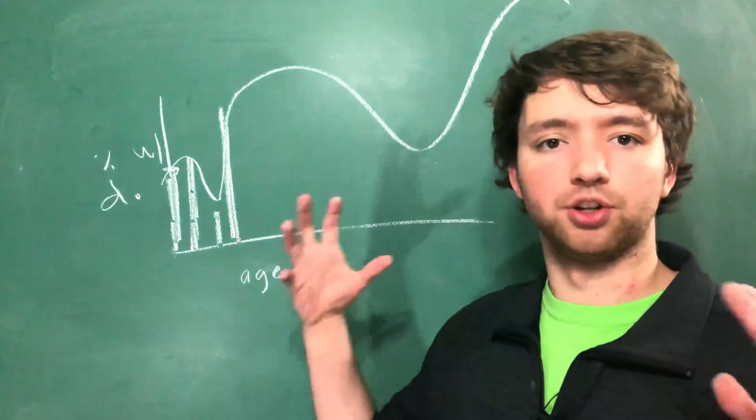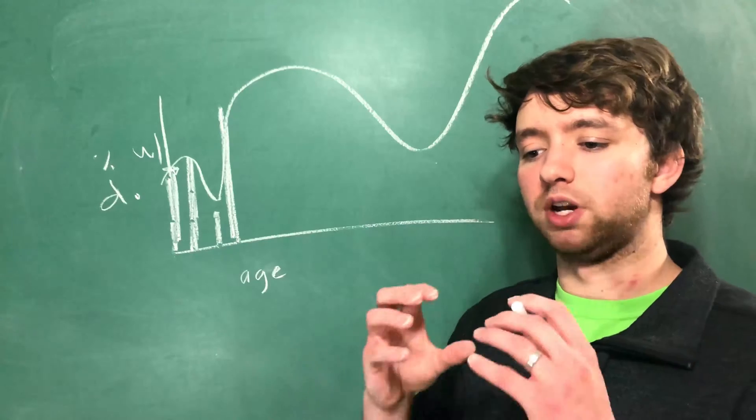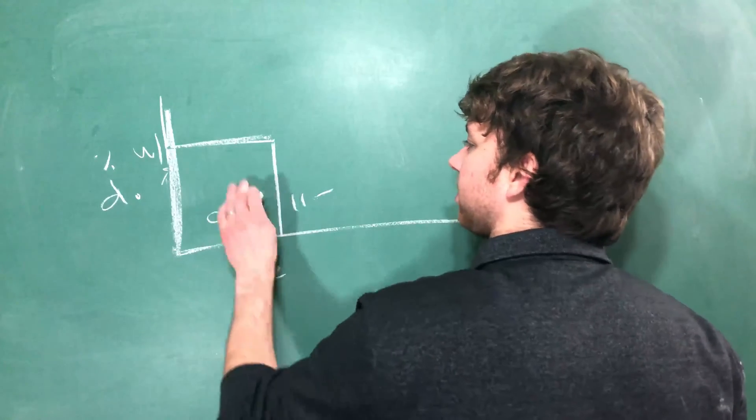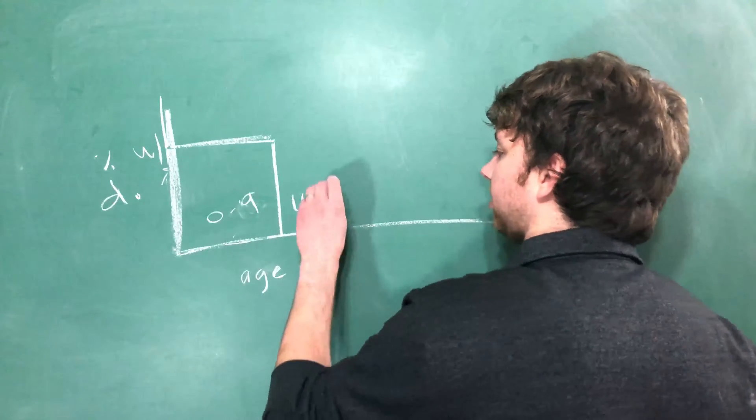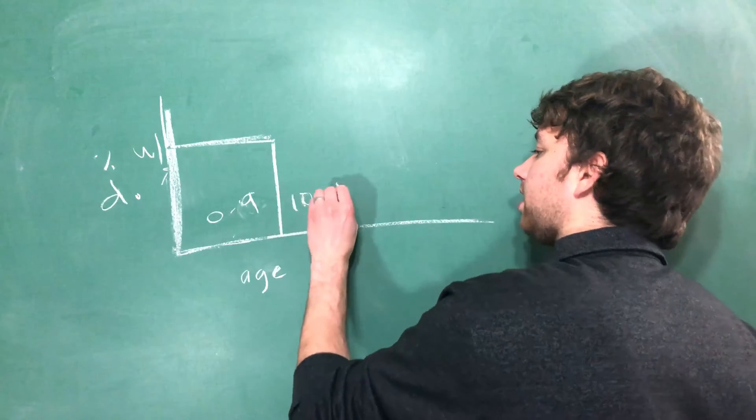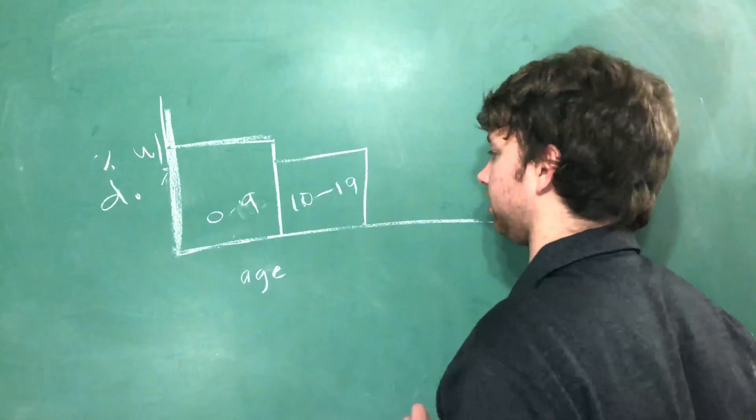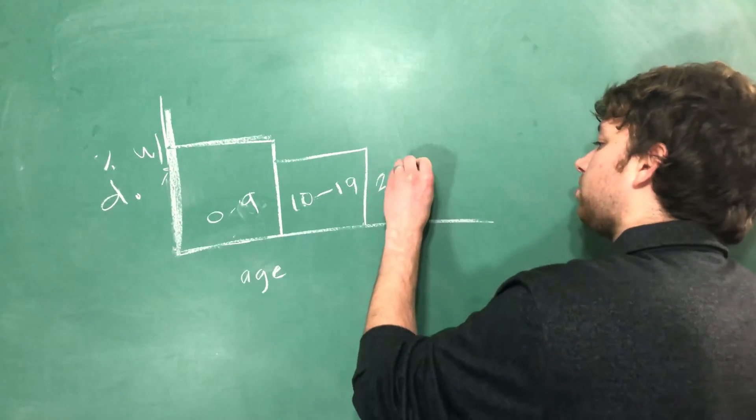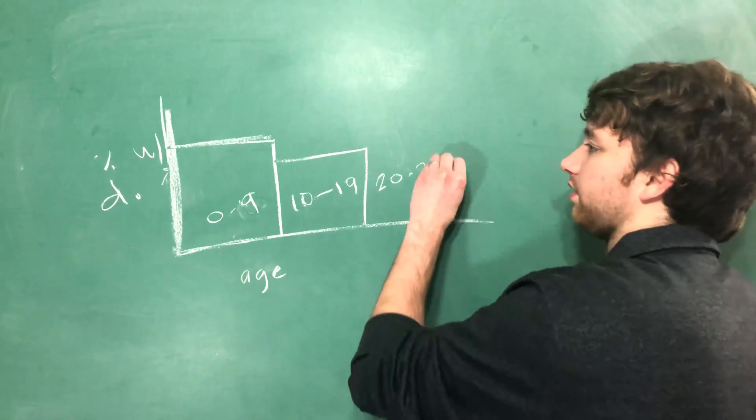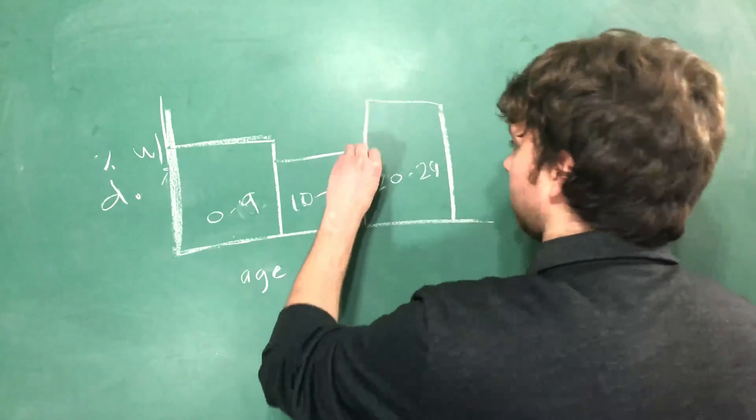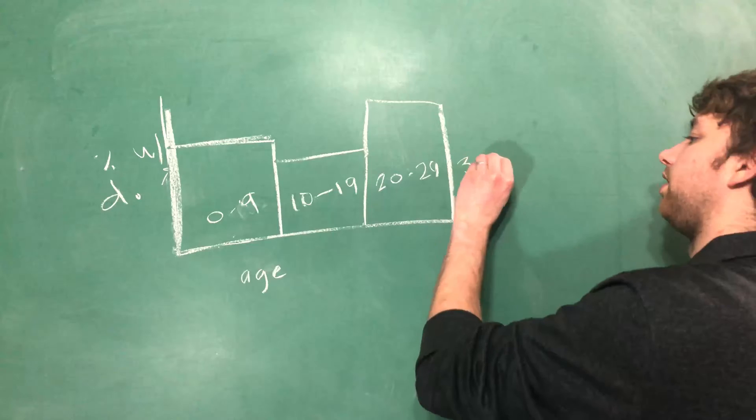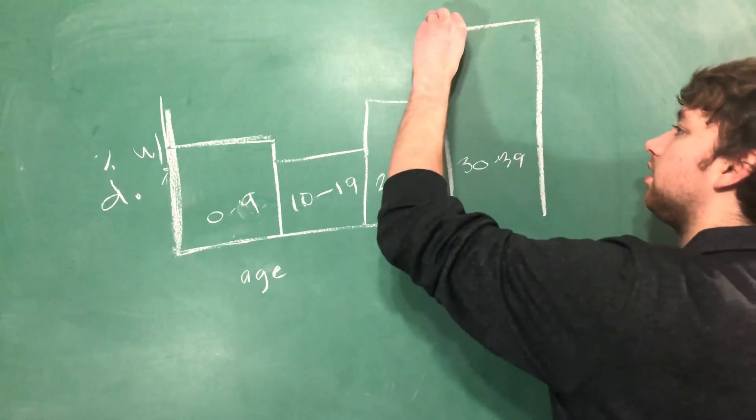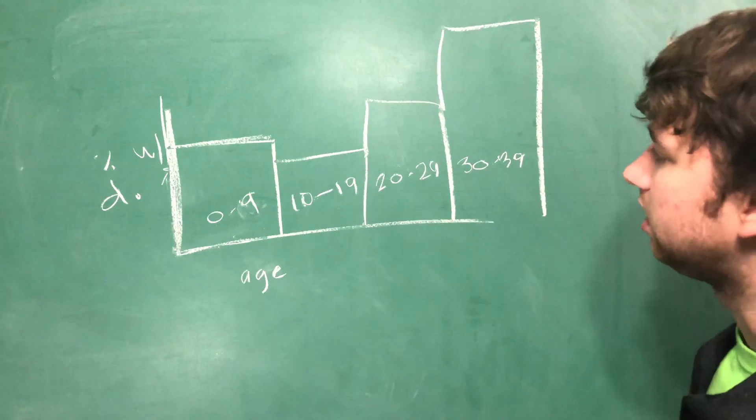We can have zero to nine and see that 50 percent have diabetes, we could have 10 to 19 and realize 40 percent have diabetes, then we could see 20 to 29 and all of a sudden data starts going upwards, and then 30 to 39 we get this huge spike.